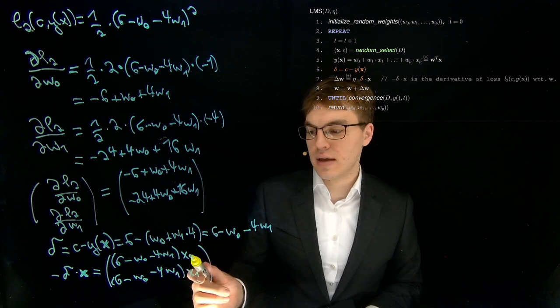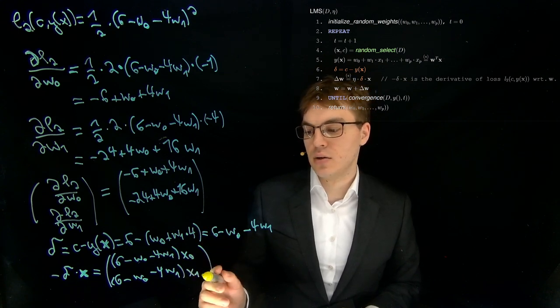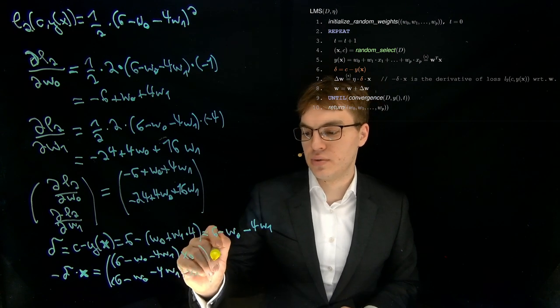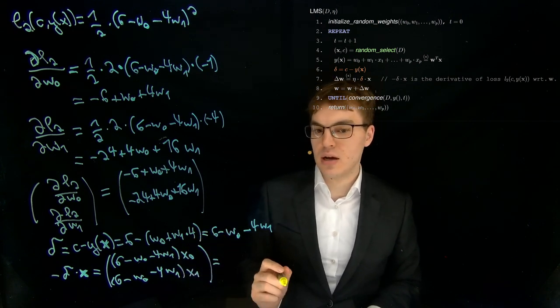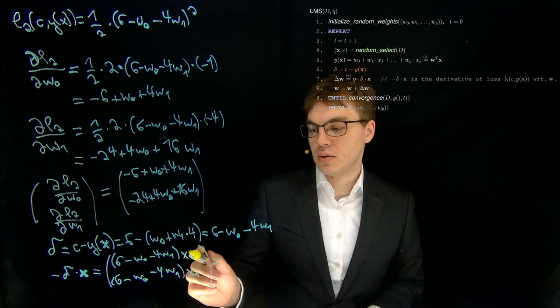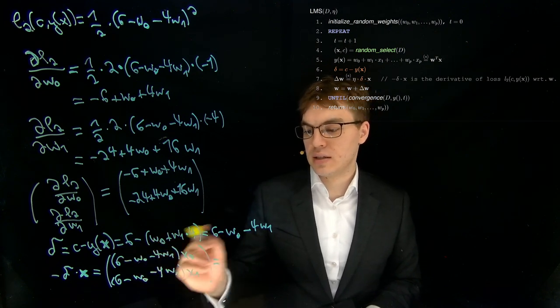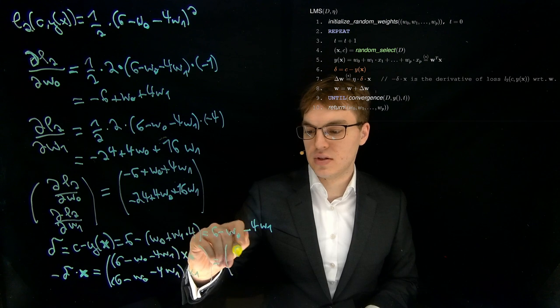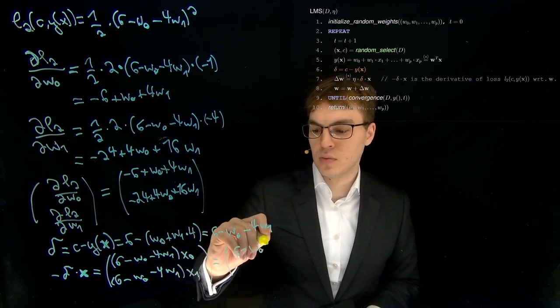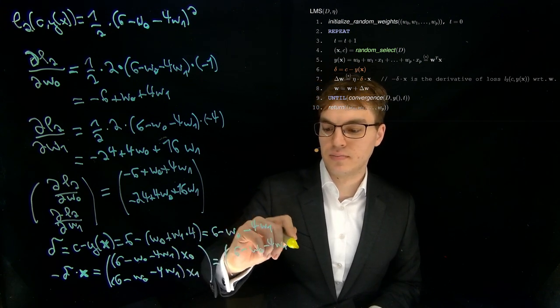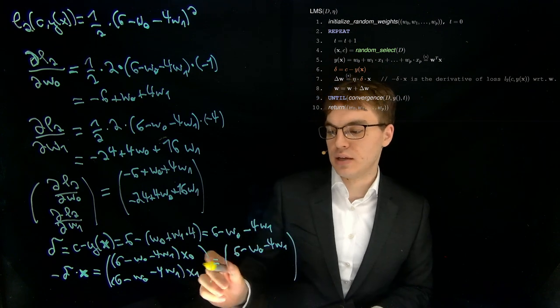As we saw earlier, we have values for X zero and X one, which is one and four. So we filled them in. We fill them in now. So if we take one here, we get six minus W zero minus four W one.